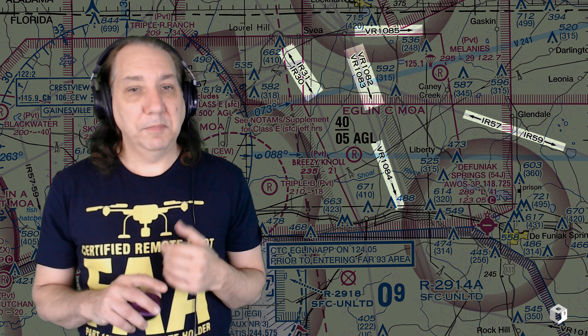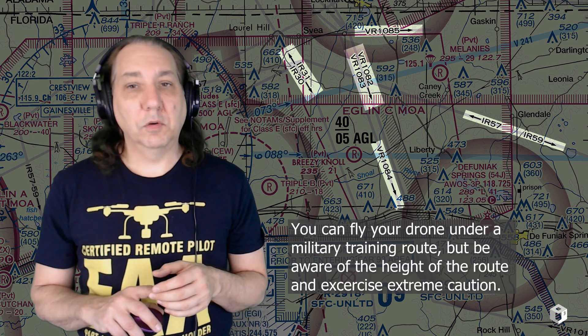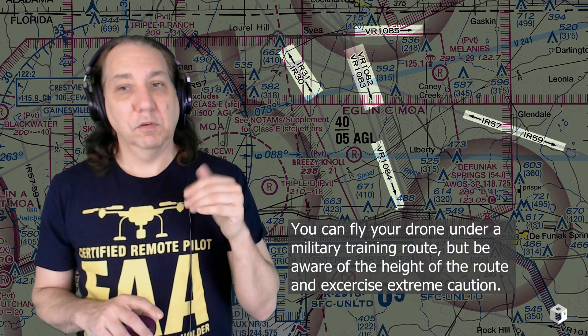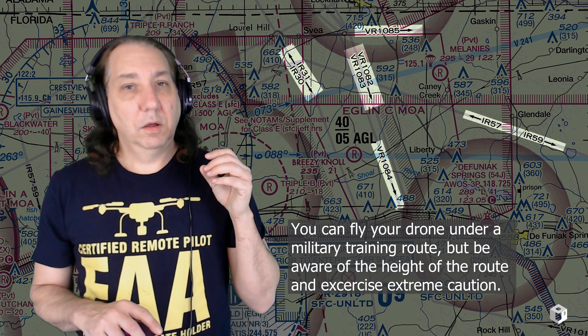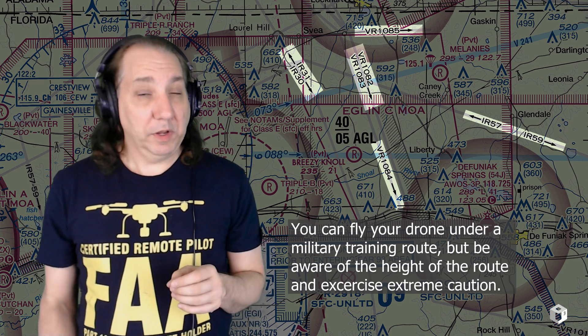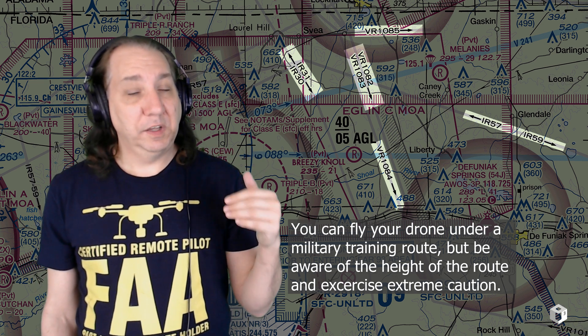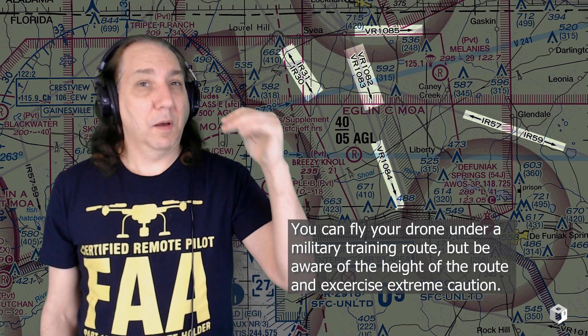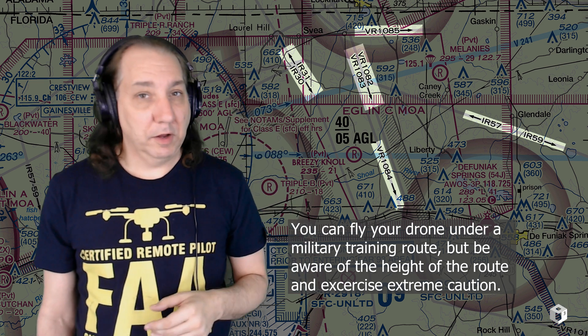Military Training Routes (MTRs) are marked IR or VR followed by a number and arrow. MTRs may include one or two segments above 1,500 feet AGL — that's above the areas we'll be operating in anyway.